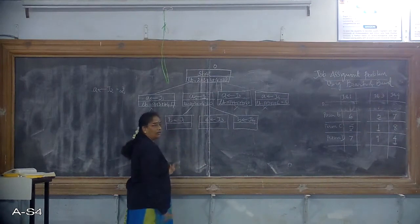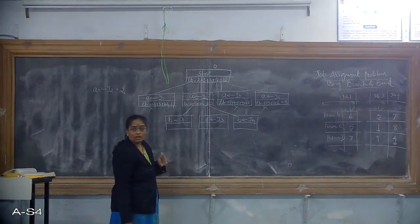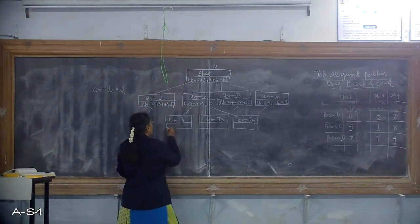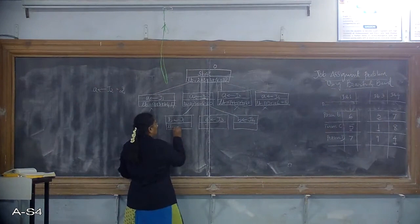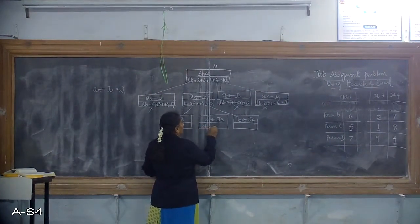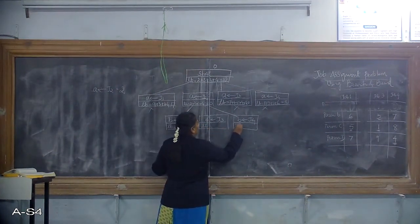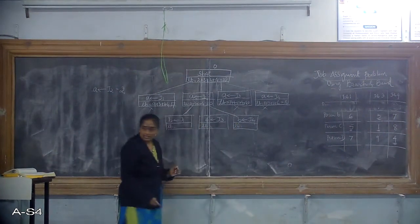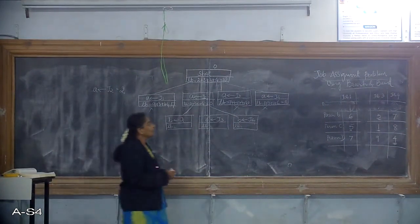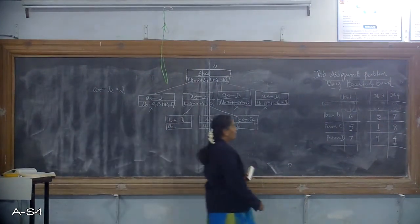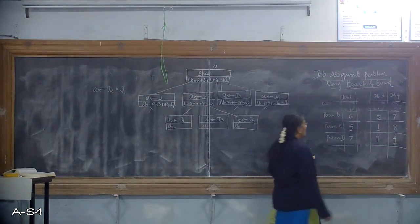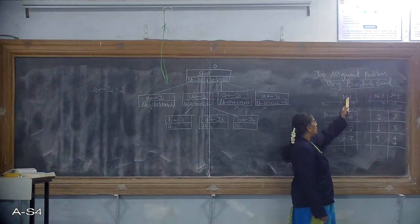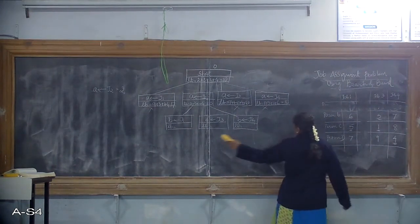For person B, I need to calculate 3 lower bound values. If I want to assign job J1 to person B, that is the first option to consider.